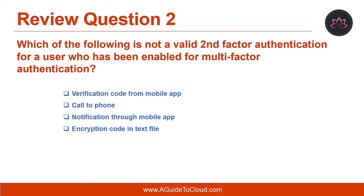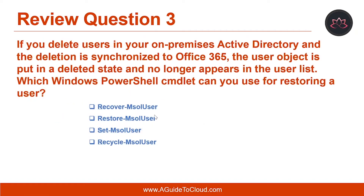Let's look at question number two. Which of the following is not a valid second factor authentication for a user who has been enabled for multi-factor authentication? The correct answer is: an encryption code in a text file.